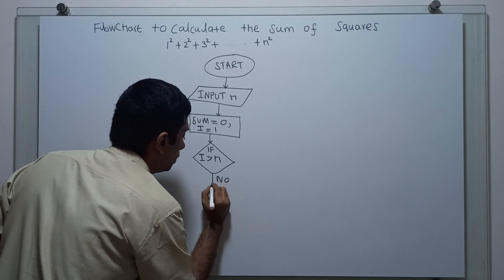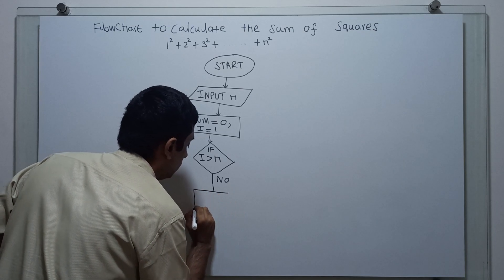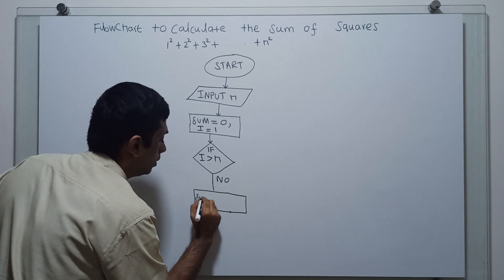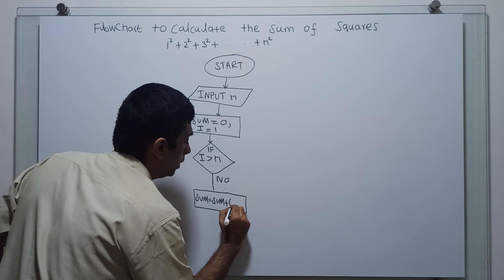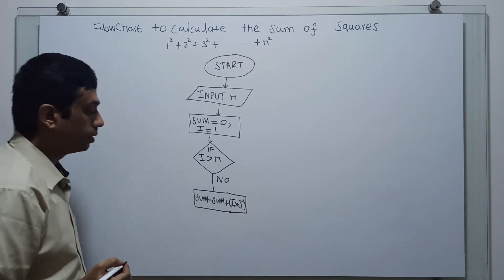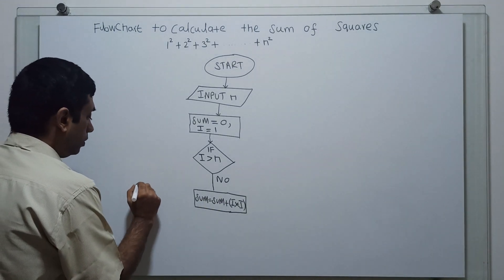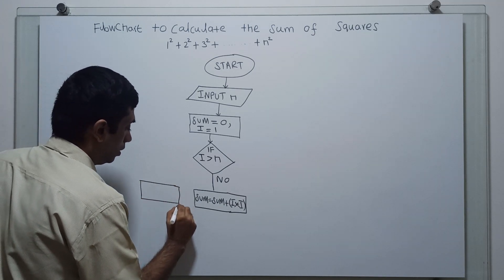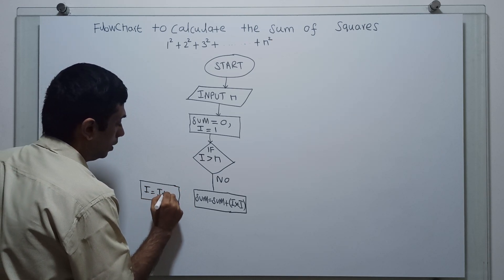On the 'no' branch, I am calculating sum equal to sum plus i star i. Next, I am incrementing the value of i to i plus 1.